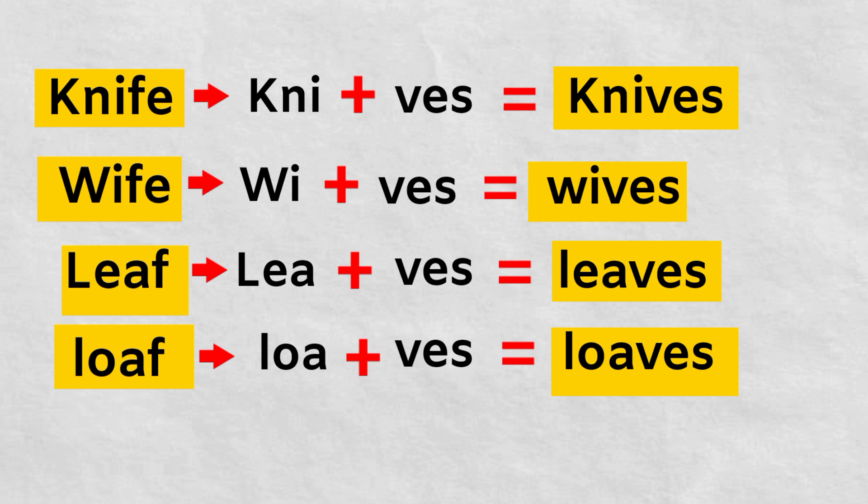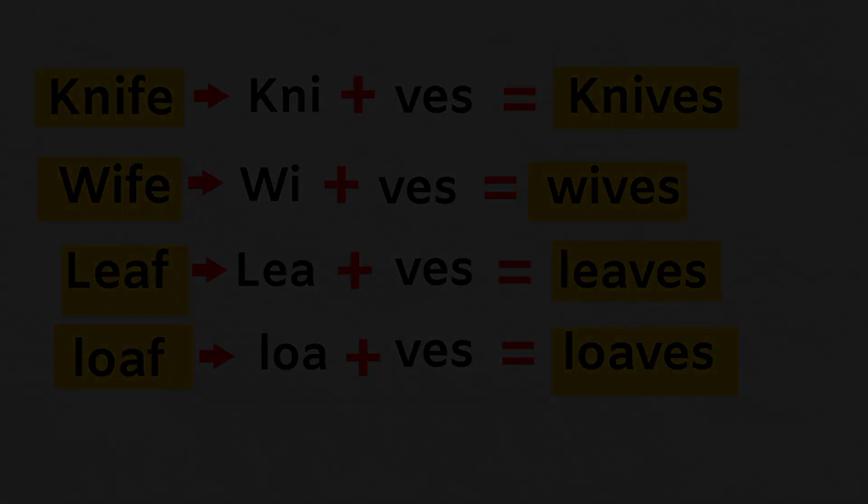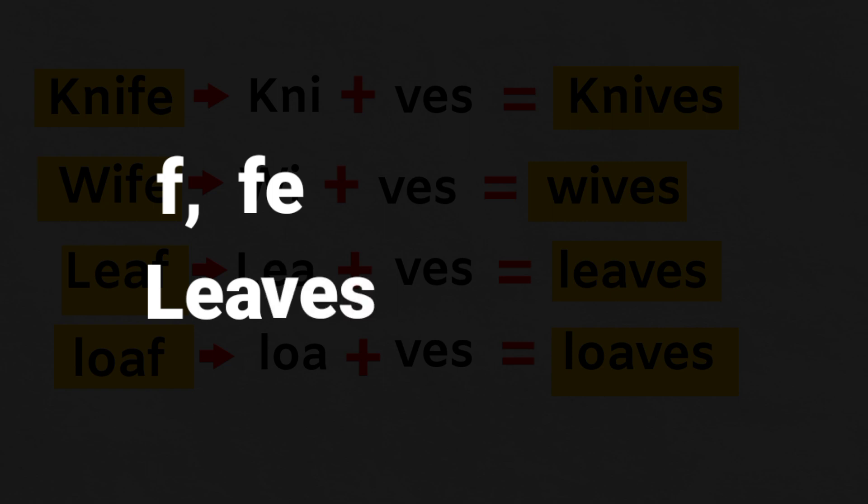Aapko kuch nahi karna hai. Aapko khali noun ko dekhna hai. Agar noun ka aakhri shabd F hai ya aakhri mein FE aata hai, to hame kya karna hai. Hame F ko remove karna hai or uski jagah pe VES lagana hai. To woh ho jata hai aapka singular to plural form. Aise hi, agar aapke noun ke aakhri mein FE hai, to hame FE ko remove karenge.